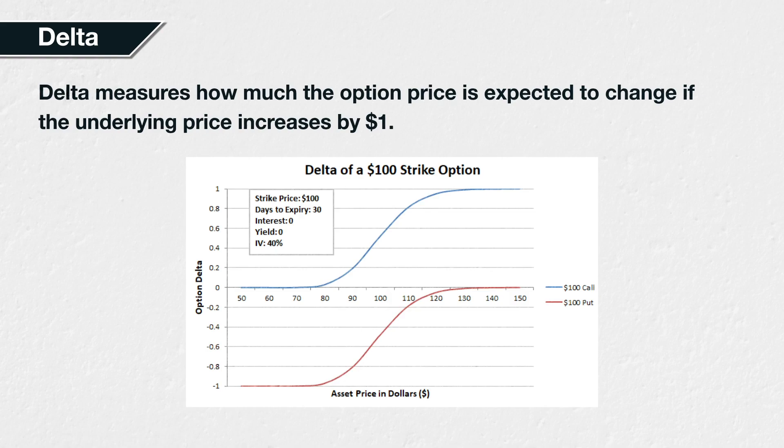If you have the right to buy an asset at $10, for instance, that right should logically have a higher value if the asset is trading at $11 than if it were trading at $10. Remember, a call option is just the right to buy some asset at the strike price.